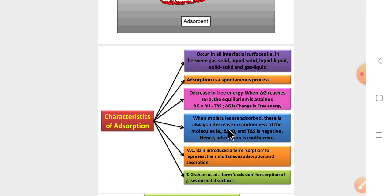And McBain introduced a term 'sorption' to represent the simultaneous processes of adsorption and absorption. The term 'occlusion' is used for sorption of gas on a metal surface. It is very important, students. Thank you students, thanks for listening.